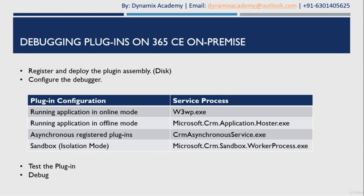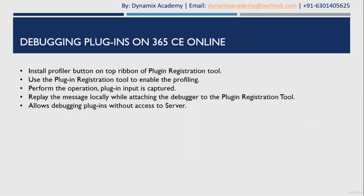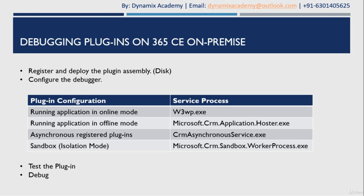If your plugin is running in online mode, you need to attach the w3wp.exe process in Visual Studio on the server. If you want to debug an offline plugin, attach Visual Studio to the microsoft.crm.application.hoster.exe process. For an asynchronous plugin, attach it to crm asynchronous service.exe, and for sandbox plugins, attach microsoft.crm.sandbox.workerprocess.exe in Visual Studio — then you can test and debug your plugins.